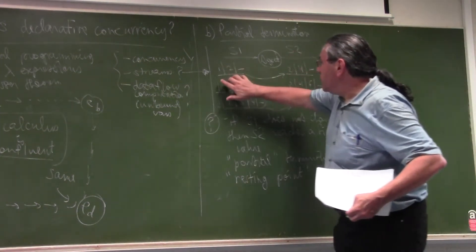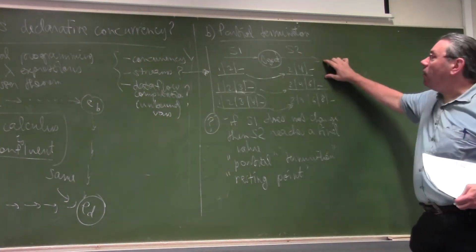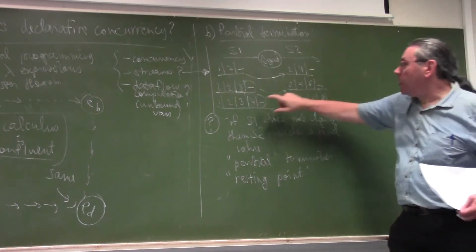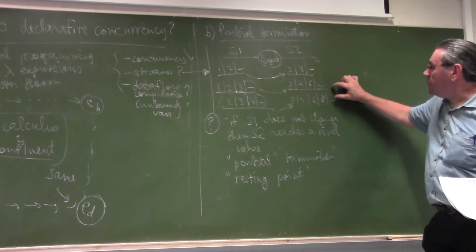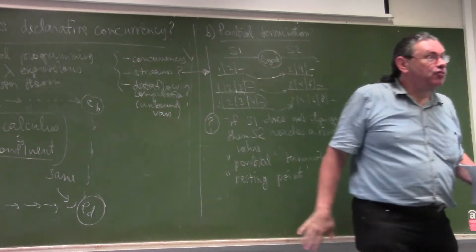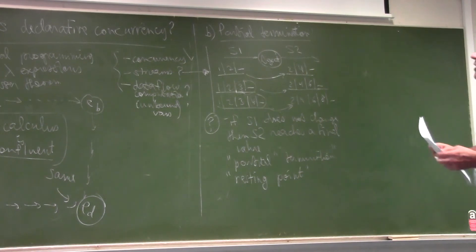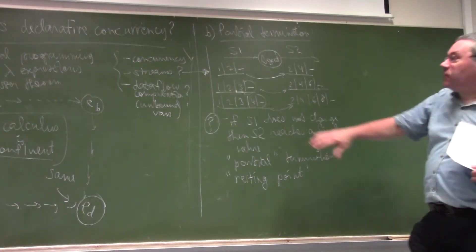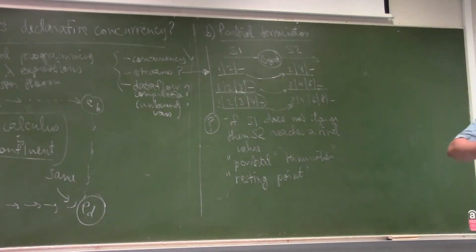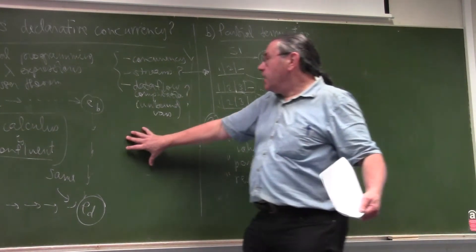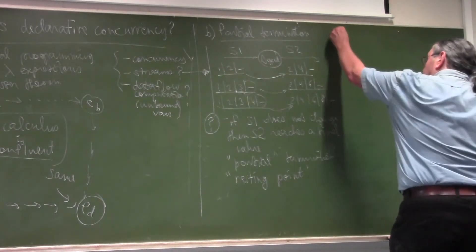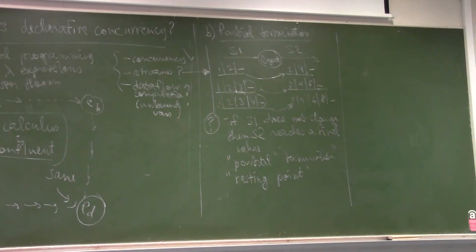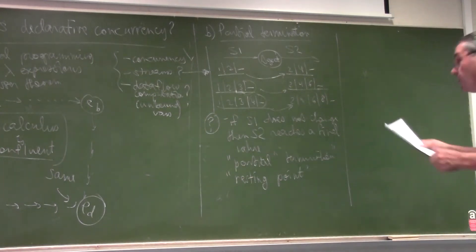Each time we give an input, it's like one function call. We give a little more input, it's like another function call. So it's like many successive function calls, and for each one we can apply the Church-Rosser theorem. That means we can extend declarative concurrency to the case of streams — even when the program never really stops, it can keep going. With partial termination, we handle the case of streams.